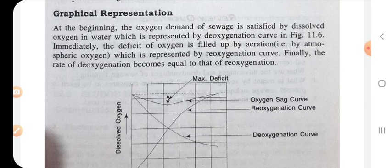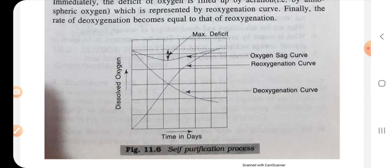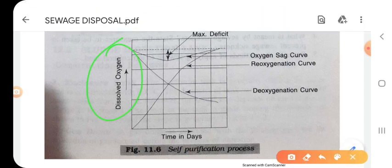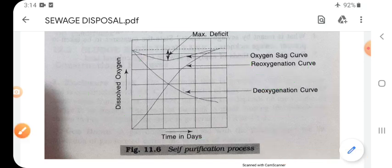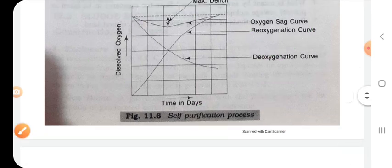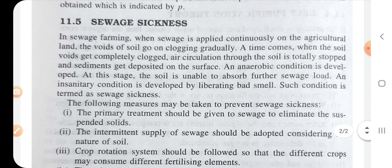Graphical representation: at the beginning, the oxygen demand of sewage is satisfied by dissolved oxygen in water, which is represented by the de-oxygenation curve. The graph shows dissolved oxygen on the Y-axis and time in days on the X-axis, illustrating the self-purification process with the de-oxygenation curve and the maximum dissolved oxygen sag curve.